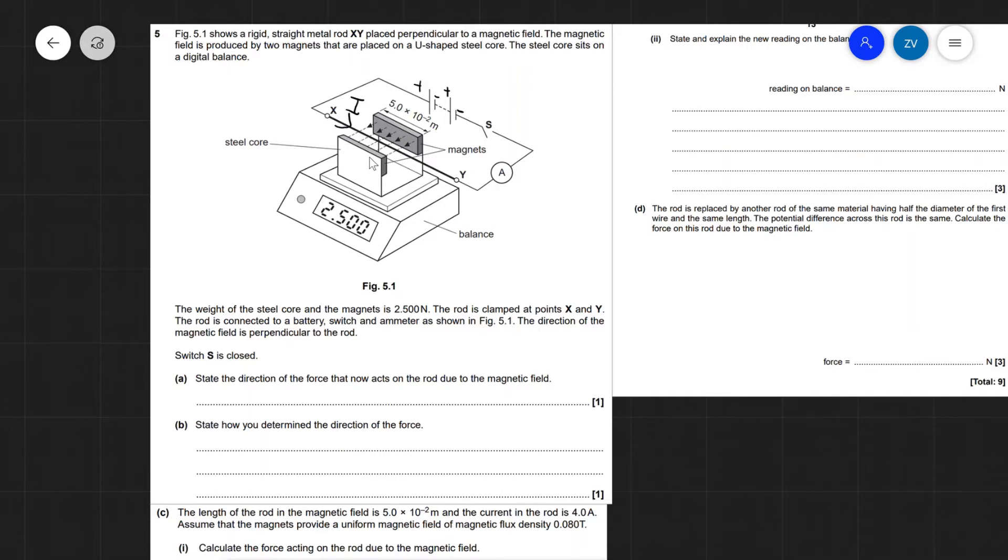We can use the left-hand rule, Fleming's left-hand rule, to determine the direction at which the force acts. We can do that because we know the direction of the current and we know the direction of the field.